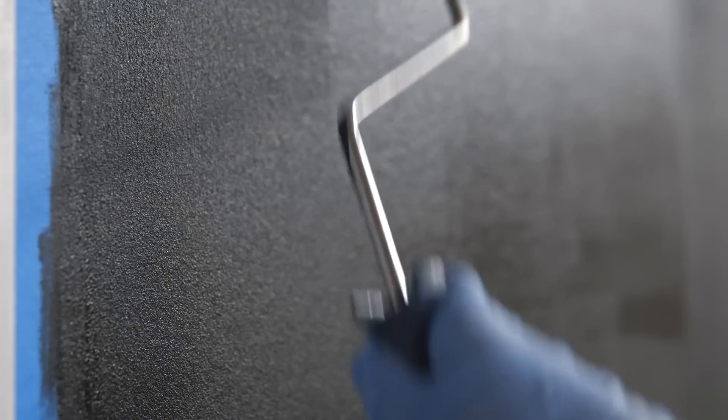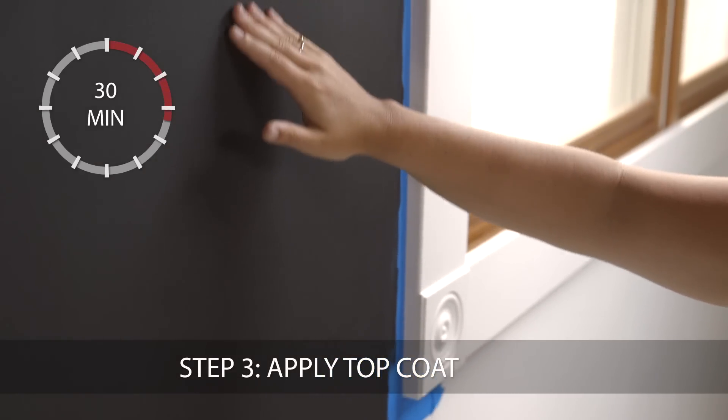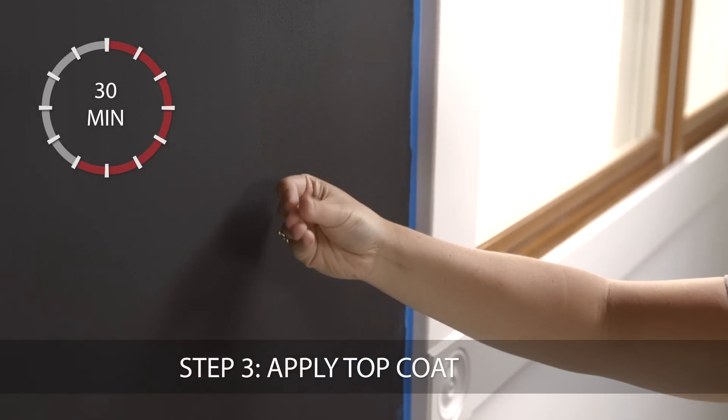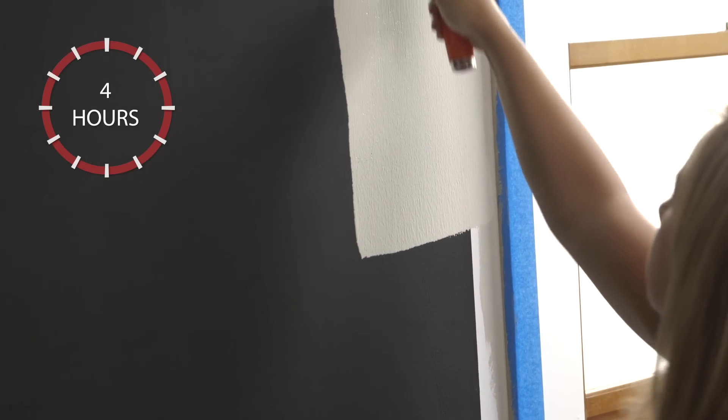Be sure to clean the foam roller and other application tools immediately after use with Xylene. The Magnetic Primer will be dry to the touch in about 30 minutes and ready for you to apply the latex topcoat of your choice after 4 hours.